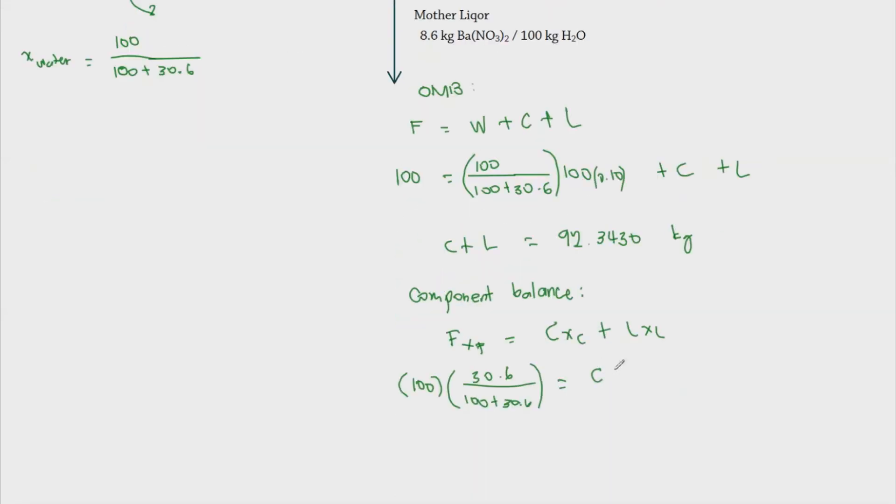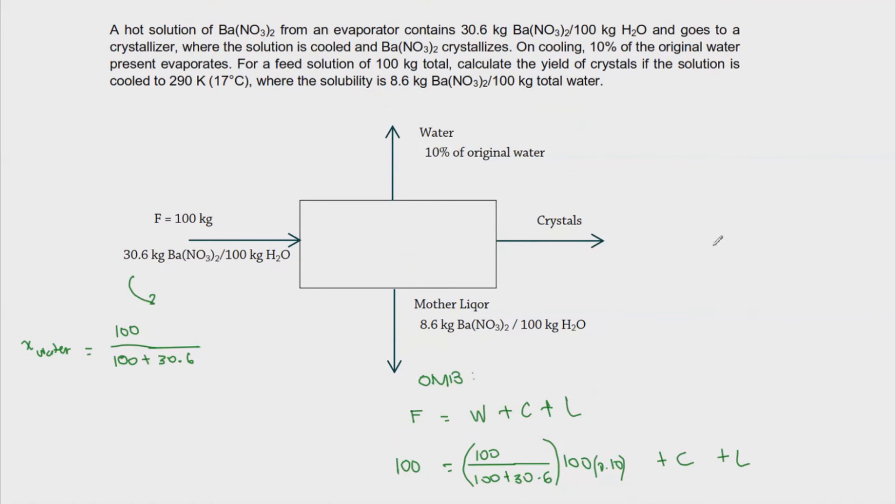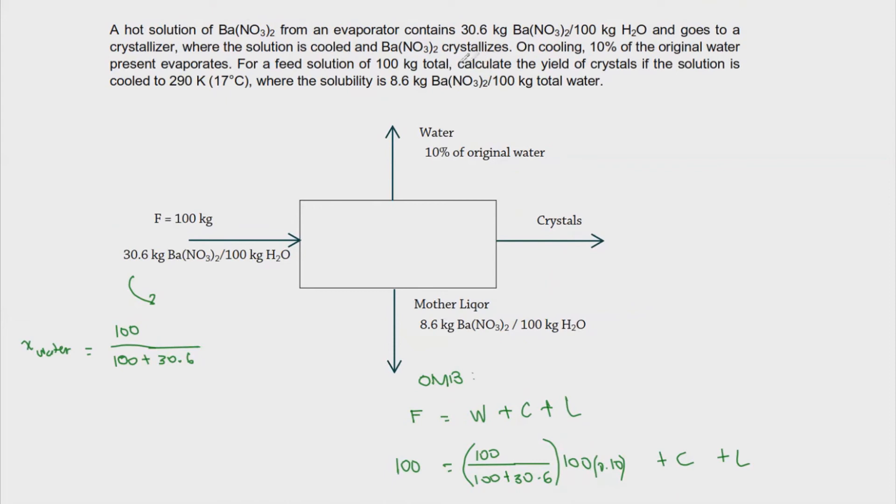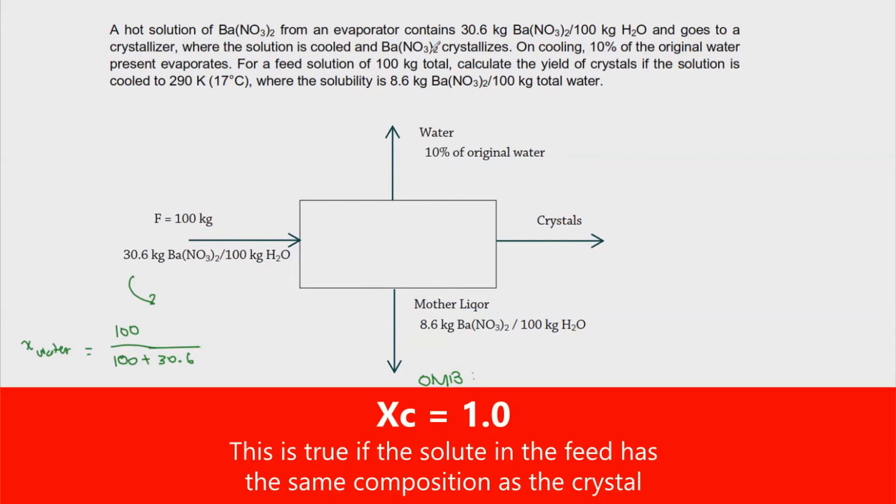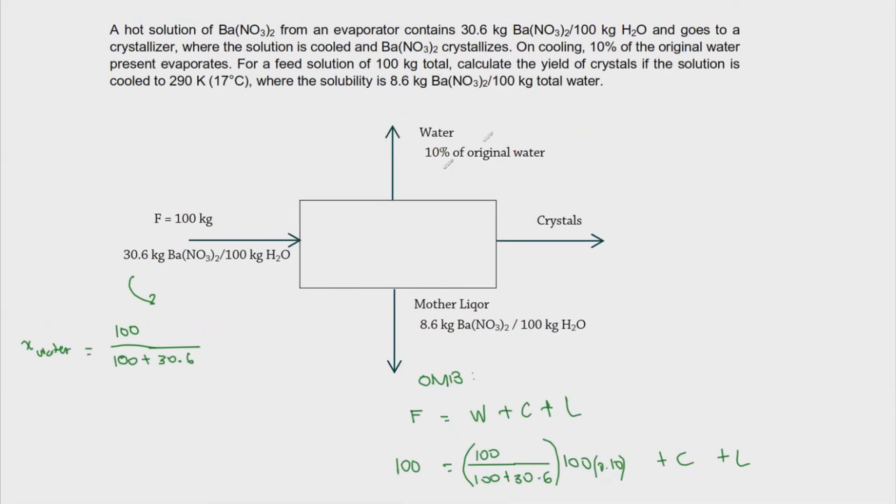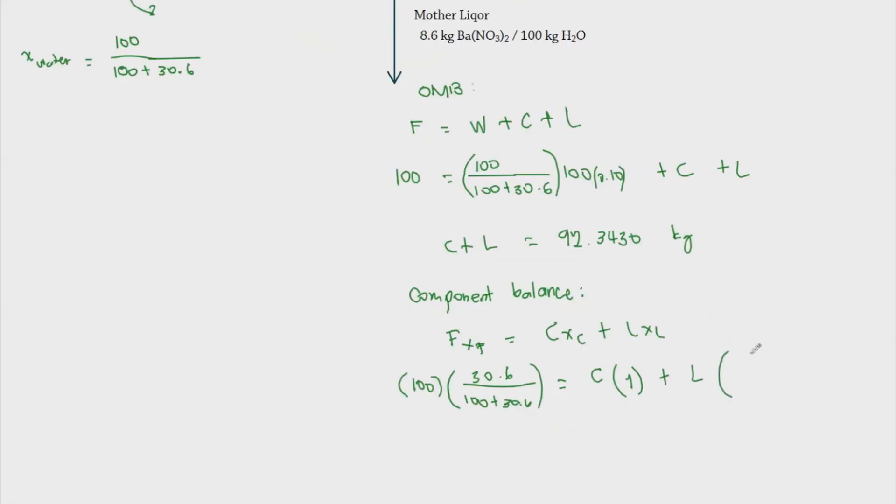And then this is equal to C times X C. Now what could be the value of our X C? This is the fraction of the crystal. And if you would be reading the problem, you will know that barium nitrate is our solute and then it crystallizes into barium nitrate itself. So this is an example of anhydrous crystal or it is a crystal wherein there is no amount of water trapped during the crystallization process. So basically X C would be equal to 1 in this case. So that is 1. And then we add L and then XL is the equilibrium concentration. And we know that at 70 degrees Celsius we are given by this solubility. So that is 8.6 and then we have 100 plus 8.6.